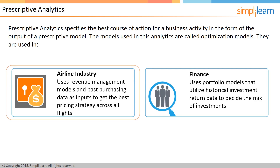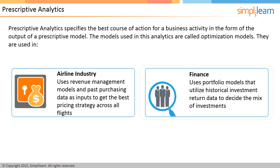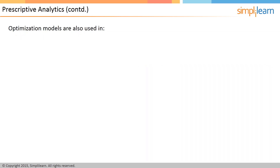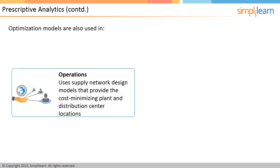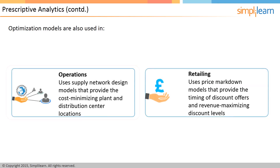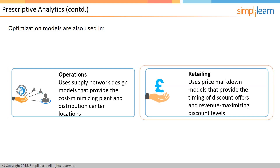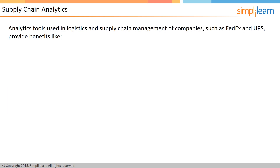The airline industry benefits by using revenue management models and past purchasing data to get the best pricing strategy across all flights. The finance industry uses portfolio models with historical investment return data to decide the investment mix. Other examples include supply network design models in operations, which provide cost-minimizing plant and distribution center locations, and price markdown models in retailing for timing discount offers. Supply chain management and logistics represent one of the traditional analytics applications, used at the core of companies like FedEx and UPS for efficient delivery and optimal sorting of goods.